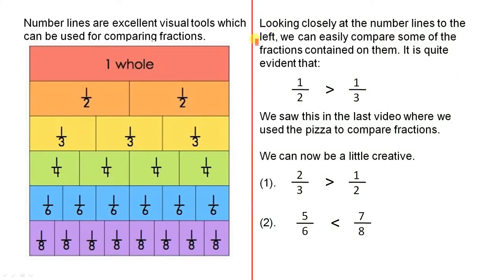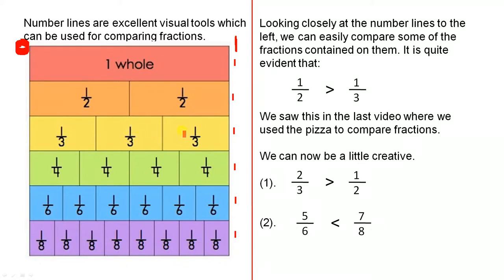Number lines are excellent visual tools which can be used for comparing fractions. Here we have 1, 2, 3, 4, 5, 6 — so we've got 6 sections here. This number line is a very simple one. It starts at 0 to 1, so we're just looking at the interval from 0 to 1. That tells us that this is a whole number. This tells us that we've divided the interval into 2 halves, then into thirds, and so on.